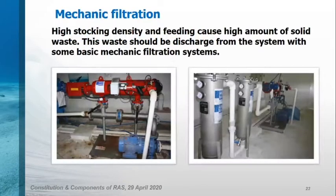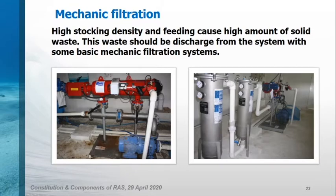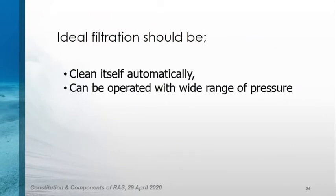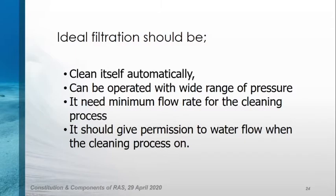High stock density and feeding cause high amounts of solid waste, which should be discharged from the system using basic mechanical filtration systems. Our system has an automatic filter with 24 microns and a pump, which pumps water from the biofilter and gives it to the back filters. The first back filter is 10 microns and the second is 5 microns. We have two pairs of back filters in parallel. When we want to change the back filters, we switch water flow to the next back filter pair so that water flow is never stopped during back filter changing. In ideal operation, the filter should clean itself automatically, operate across a broad range of pressure, need minimum flow rate for cleaning, and allow water flow while the cleaning process is active.